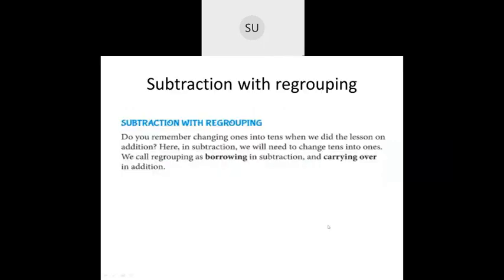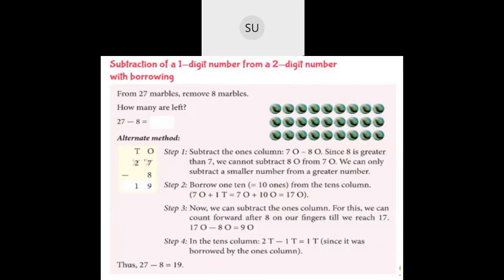Now, subtraction with regrouping. Just like in addition you have carrying over — when a number exceeds nine in any place, you carry it to the next place — the same way in subtraction we do borrowing. In addition, regrouping is called carrying over; in subtraction it is known as borrowing.